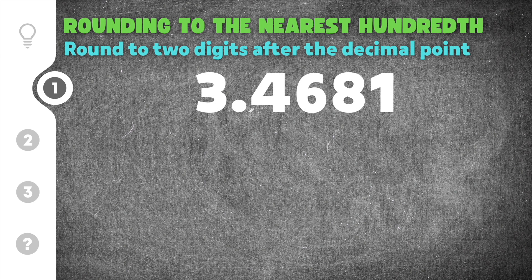Our first practice problem is 3.4681. The first thing we want to do is identify which digit is the hundredths value. We have tenths, hundredths, thousandths. Right here, this six is the hundredths. I'm going to draw a line here so I know we're rounding to that six.